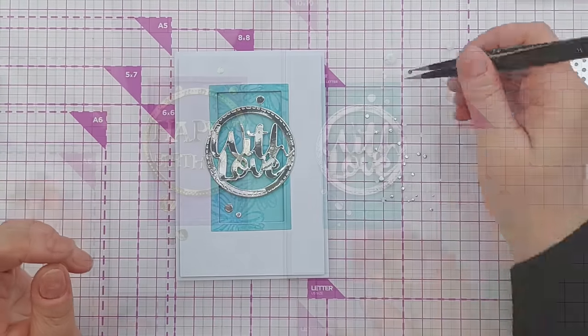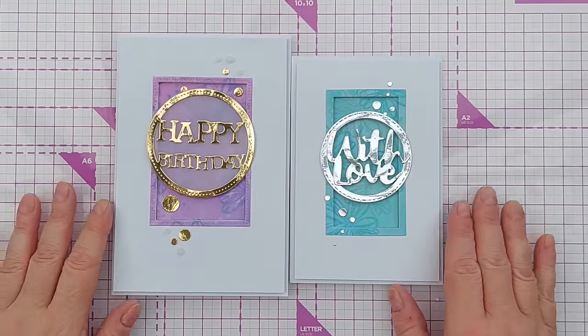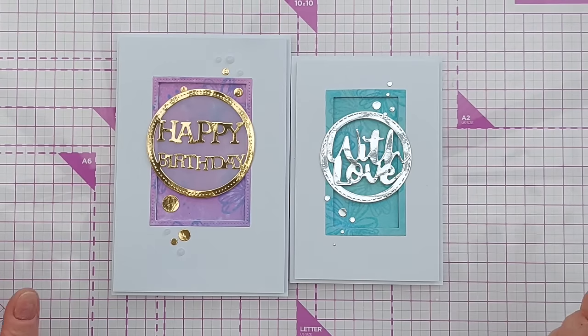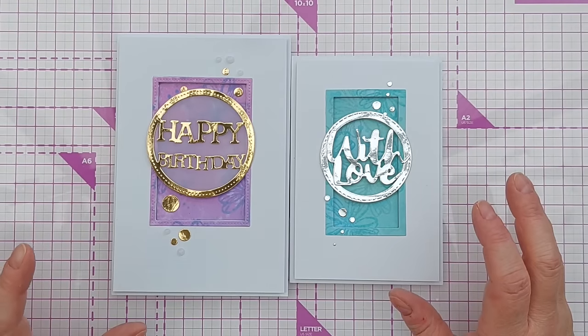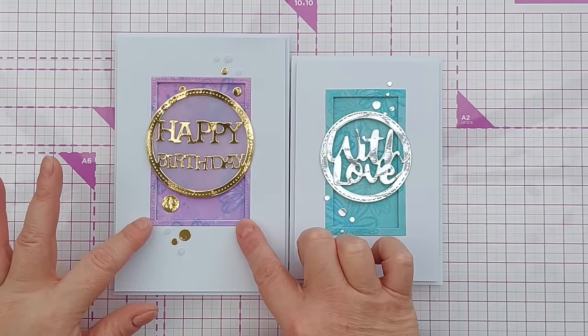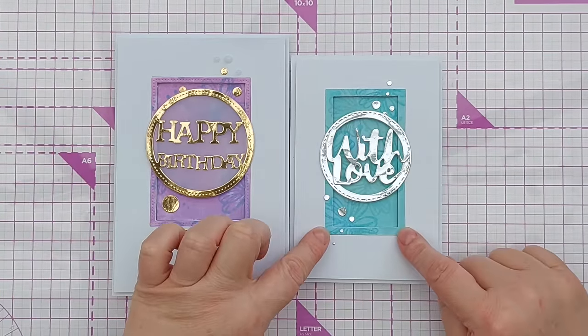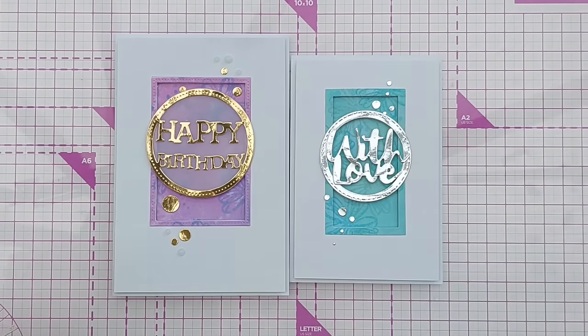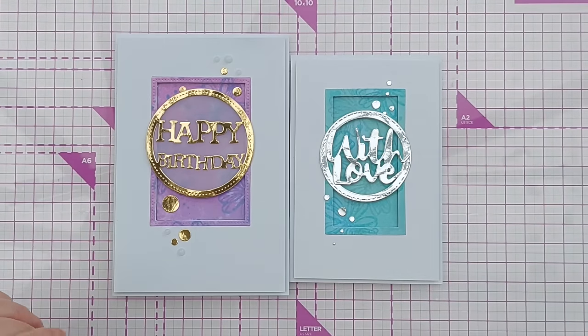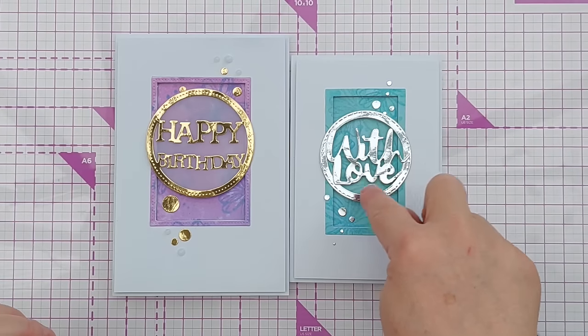There we go—two cards created from the same design idea but with different supplies. This one with a ready-made frame die and a ready-made sentiment die, and this one with a homemade frame die and homemade circle sentiment die. So hopefully you've got something in your stash that you could use to create that look.